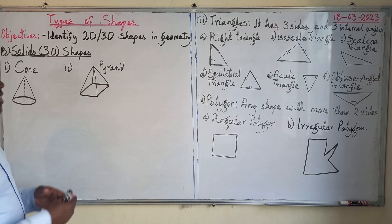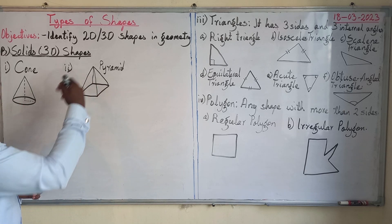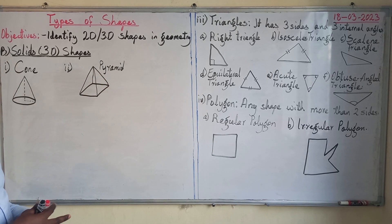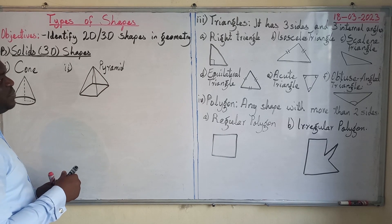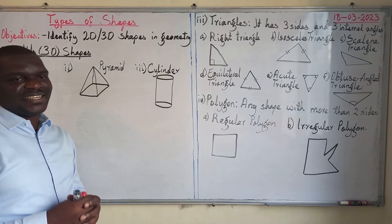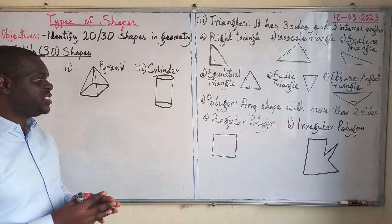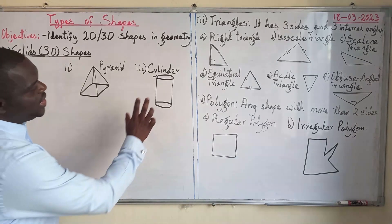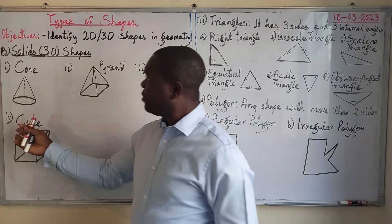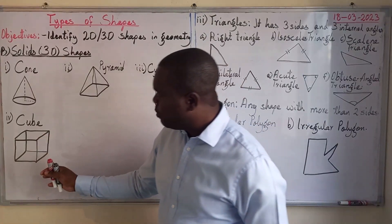The next solid shape is a pyramid. With pyramids, the base can be a rectangle, a square, or a triangle — it is still called a pyramid. Next is a cylinder, which is a solid or three-dimensional shape whose surface is curved.